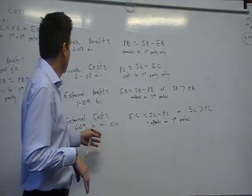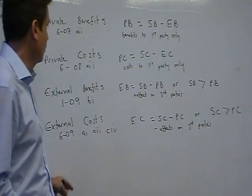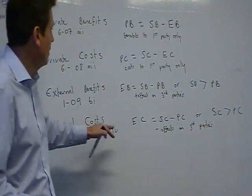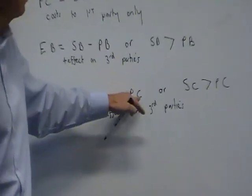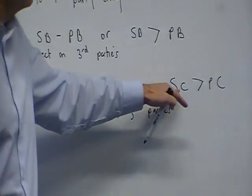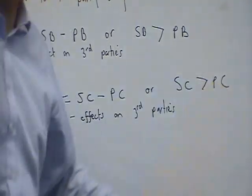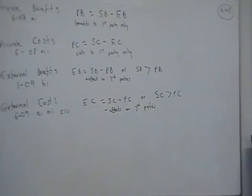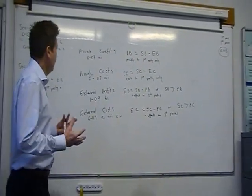Remember, external benefits and external costs. So, for external costs, don't forget, it's social costs minus private costs. Or, social costs is greater than private costs. It's the difference between the two.